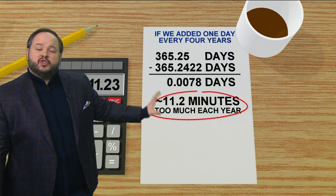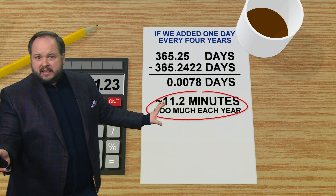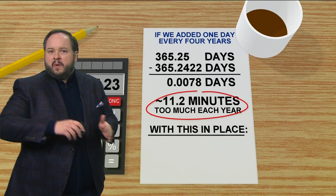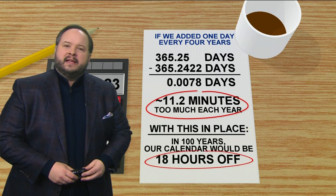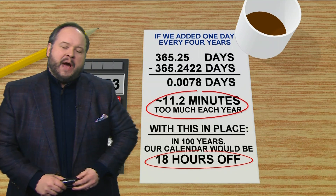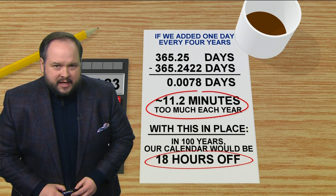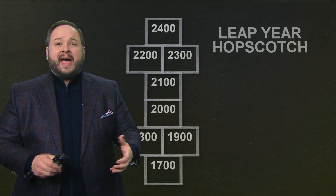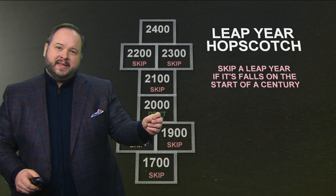That would be 11 minutes too much each year. Not a big deal on a yearly basis, but when you start to add that up, the calendar would be off by about 18 hours within 100 years. So we've got to do something that gets us a little bit closer to that — it's another math problem.